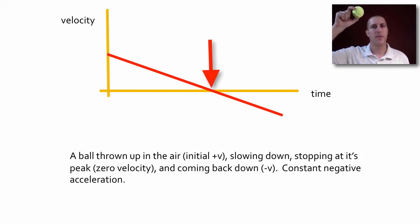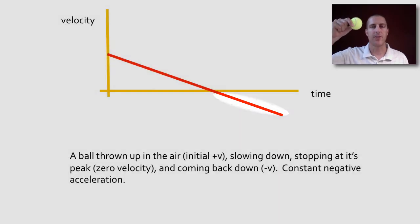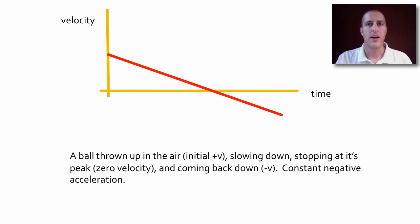When it reaches its peak, it stops momentarily, has a zero velocity momentarily, and then it starts coming back down with a negative velocity. And as we'll learn, gravity is causing the acceleration on the ball, which is constant, a constant negative 9.8 meters per second squared. So our acceleration, the slope of this graph, should be constant, and in this case it is.